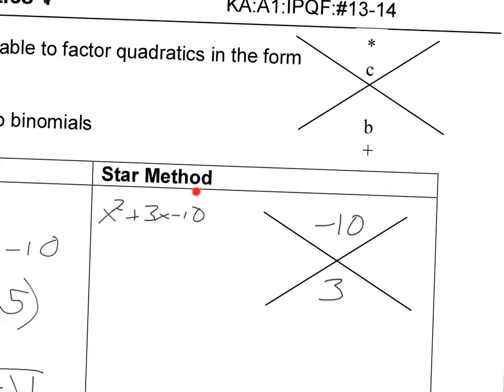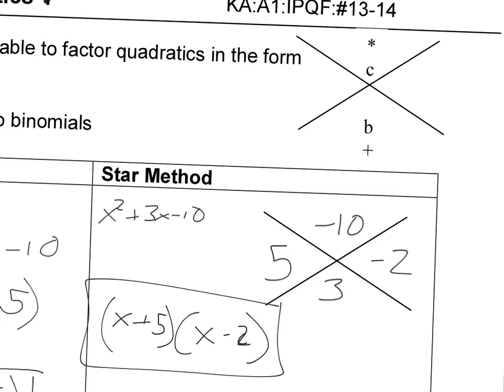Again, the B term is 3. So the middle term on the bottom, the last term on the top. And we're looking for two numbers, again, that multiply up to the C term. So multiply up to negative 10 and add up to 3. Well, we've already done this. It's 5 and negative 2. Let's just check real quick. 5 times negative 2 is negative 10. 5 plus negative 2 is 3. Okay. Once we have these numbers, all we have to do is do X plus those numbers and we have our factors. So X plus 5, X minus 2. And there's our factors.